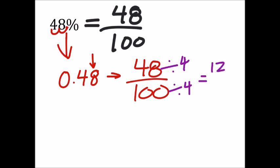So I get a 12 over 25. And that looks like it cannot be simplified any further. So this would be the fraction of that percent in lowest terms.